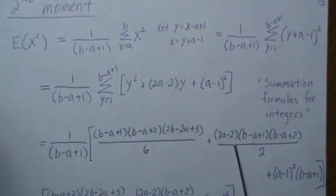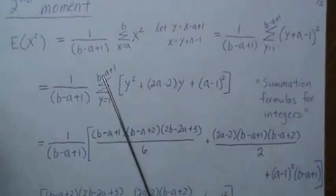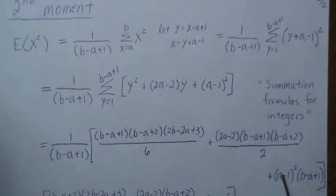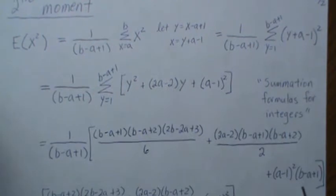And then here the 2A minus 2 comes out, and then this is the sum of the integers from 1 to B minus A plus 1, and then that's a constant, and there's B minus A plus 1 of those, so that's what this is.